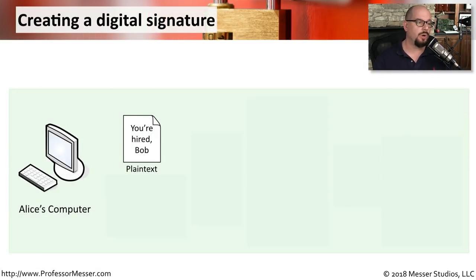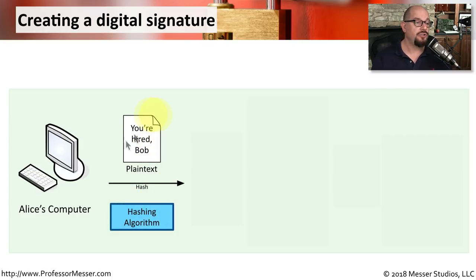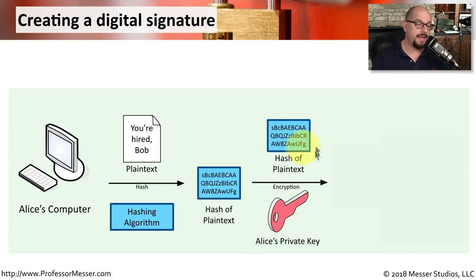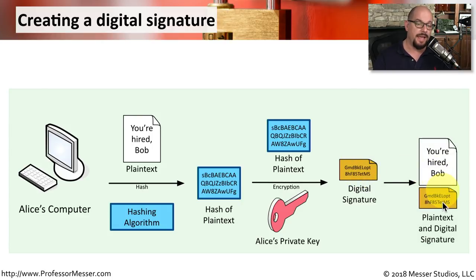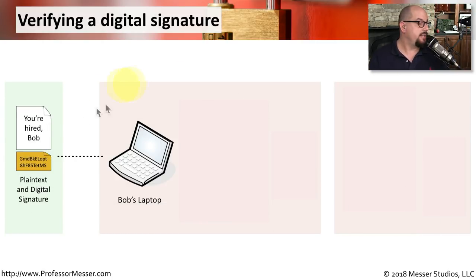Here's how this works visually. We start with Alice, who wants to digitally sign a document she's sending to Bob. The plain-text document says "You're hired, Bob." She hashes this document to create a hash of that plain text, then encrypts the hash with her private key — which no one else has access to. The result is the digital signature. It's common to attach the digital signature to the original plain text and send both to the recipient, which is exactly what Alice does here: she sends the plain text and digital signature together to Bob.